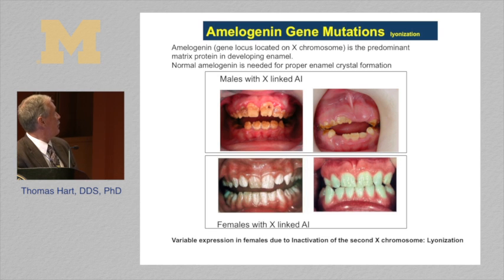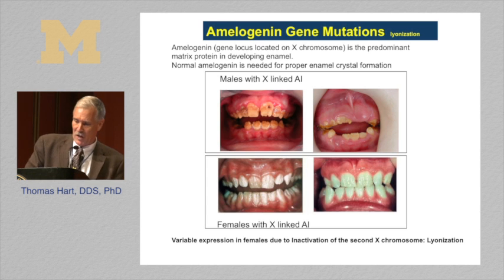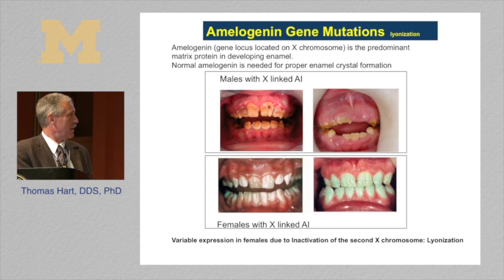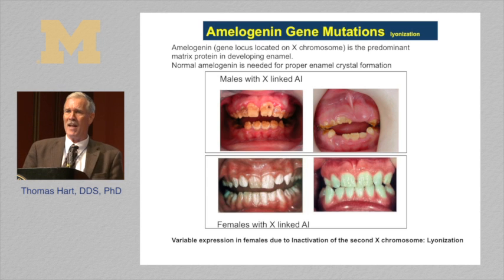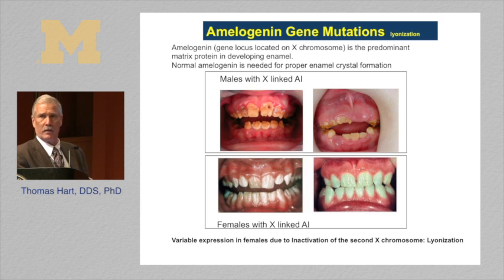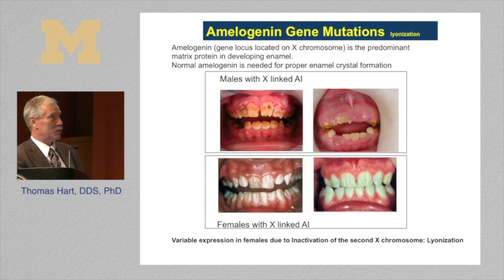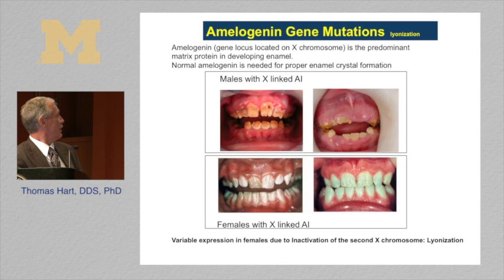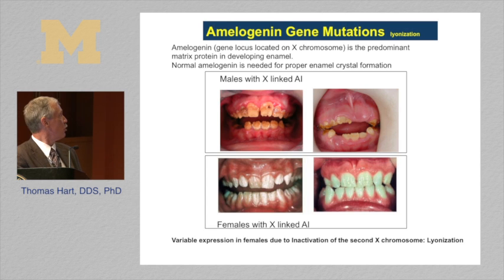There are other effects for the amelogenin gene on chromosome X. You may have a phenomenon called lionization — inactivation of the X chromosome — and it's a random inactivation. If you're looking at an individual and getting information about other family members to see if they have AI, males can be much more severely affected than females, who can have inactivation of the chromosome carrying the gene mutation. You may see this variable expression even segregating through a family.